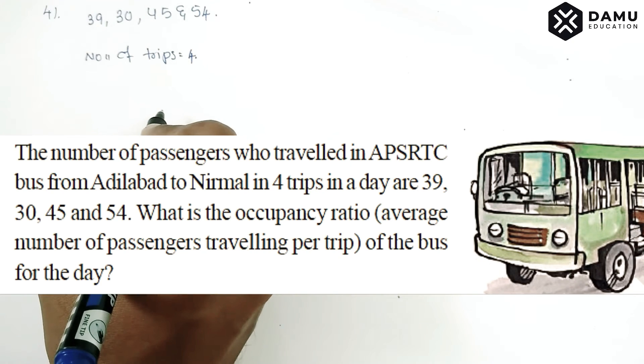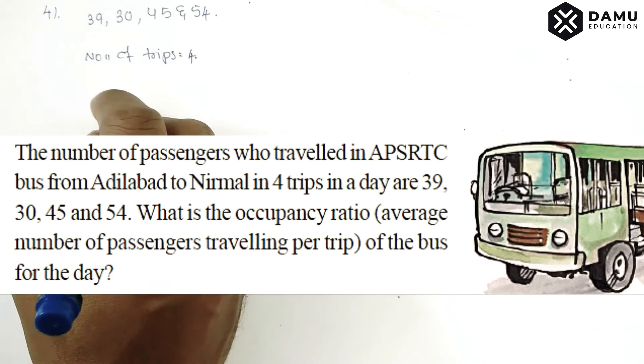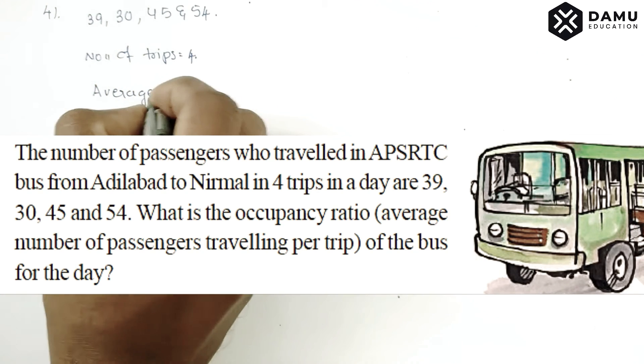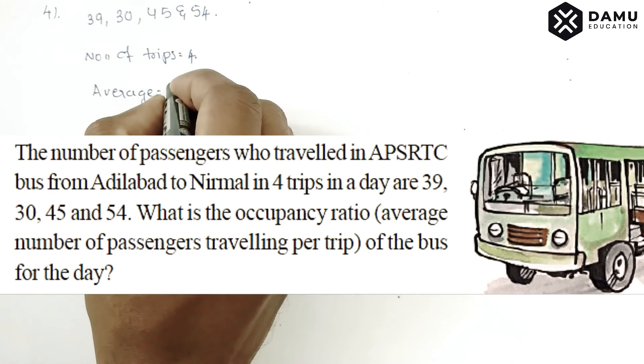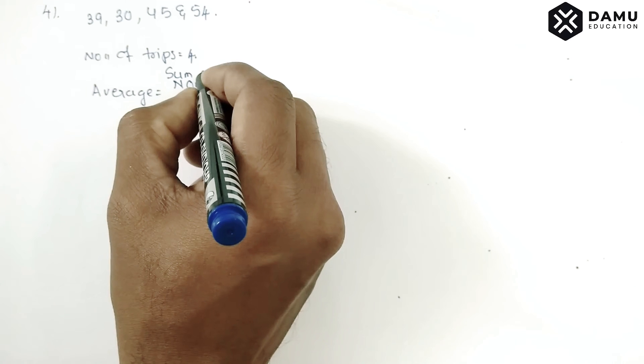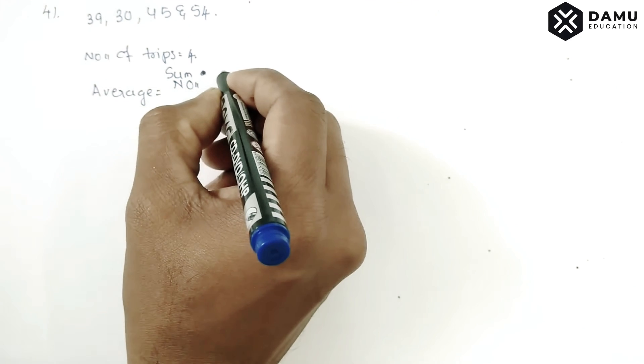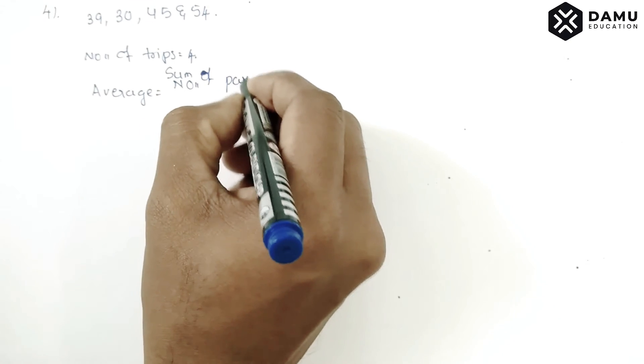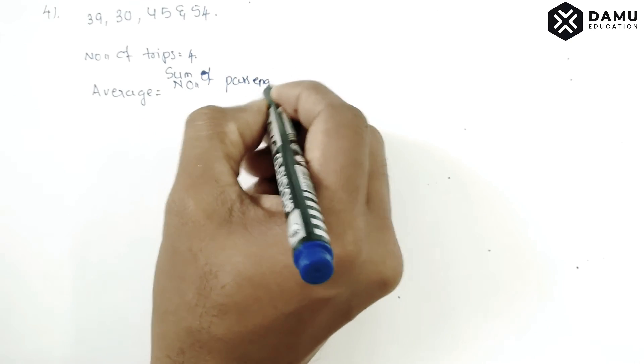Then what is the average number of people or passengers? Average will be equal to sum of number of passengers traveling, sum of number of passengers.